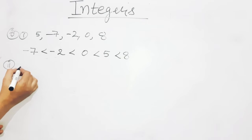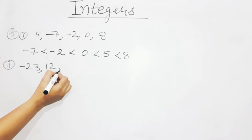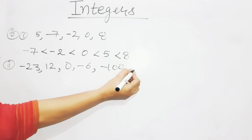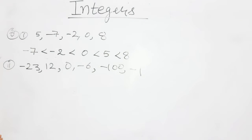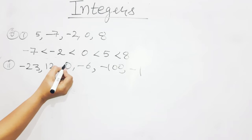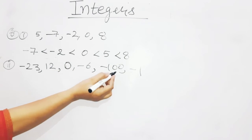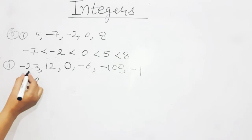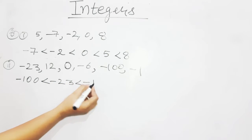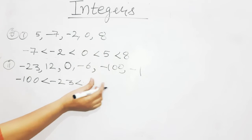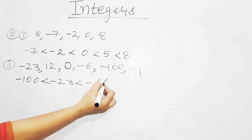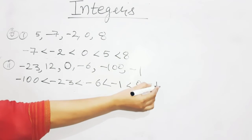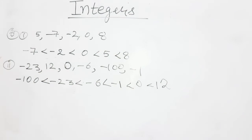Coming to the second option: minus 23, 12, 0, minus 6, minus 100 and minus 1. The smallest one is minus 100. Then minus 23, then minus 6, then minus 1, then 0, and then 12. The positive number is the largest one, placed at the end.